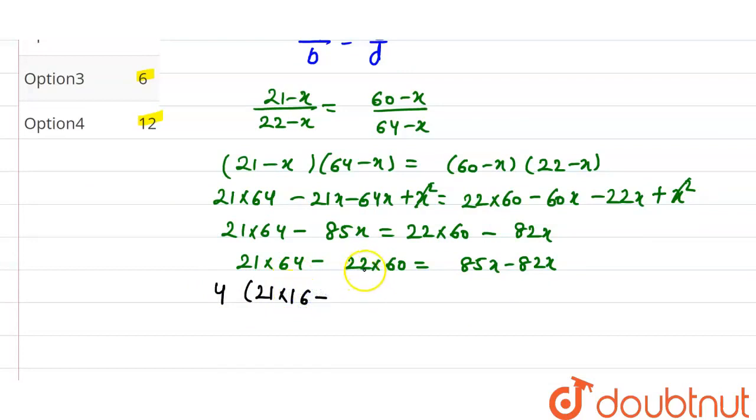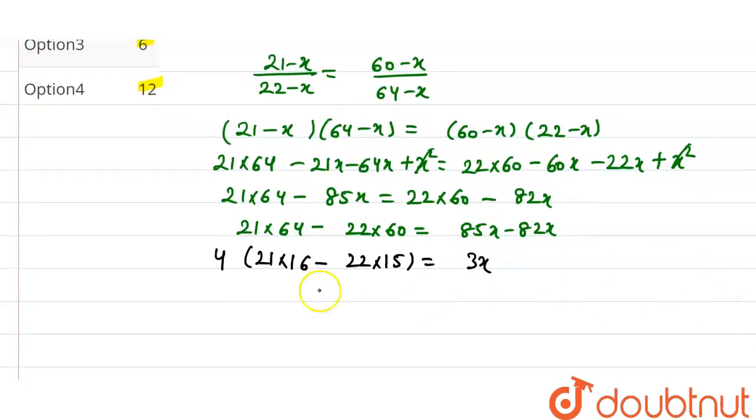21 divided by 4 is approximately 16, so 4 times 16 is 64. After simplification, we get 132 minus 330 equals 3x.